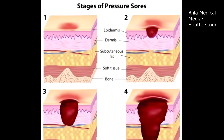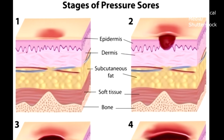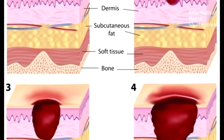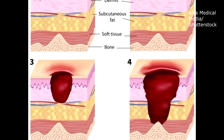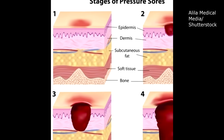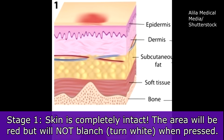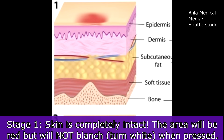Now let's talk about staging of pressure injuries based on the national pressure injury staging system. Stage one: the skin is completely intact — that top layer is not broken. The area will be very red, but the key thing to remember about stage one is that it doesn't blanch. If you pressed on that red area, it would not turn white — it would stay the same color. Here is an example of a stage one on the heel: pressing on the extremely red area, it would not blanch.